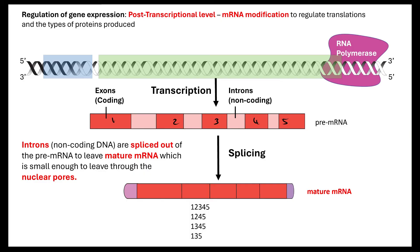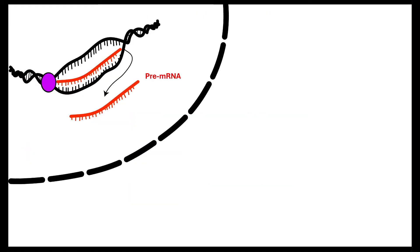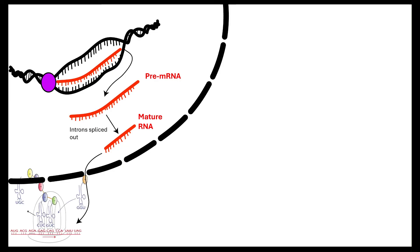The other thing to note at the post-transcriptional level is that we have a cap and a tail added on, which is to prevent degradation in the cytoplasm and also to aid binding to the ribosome. So we have our pre-mRNA which is spliced — the introns are removed — leaving us with our mature mRNA, which is able to leave through the nuclear pores to the ribosomes for translation to occur.